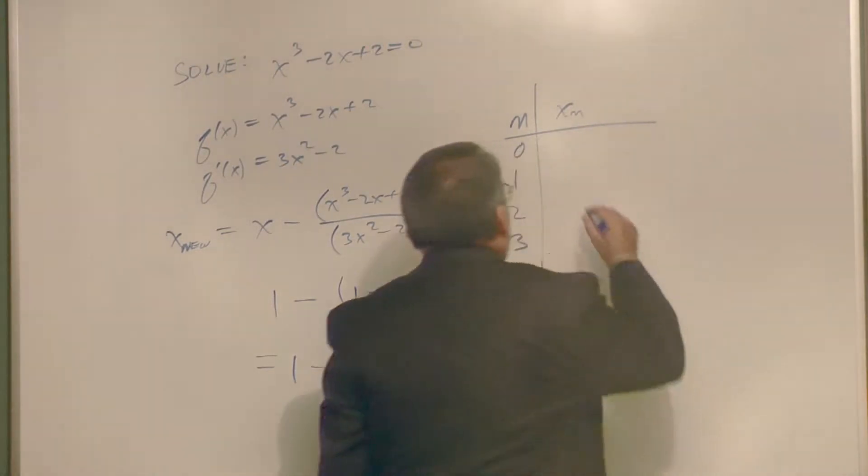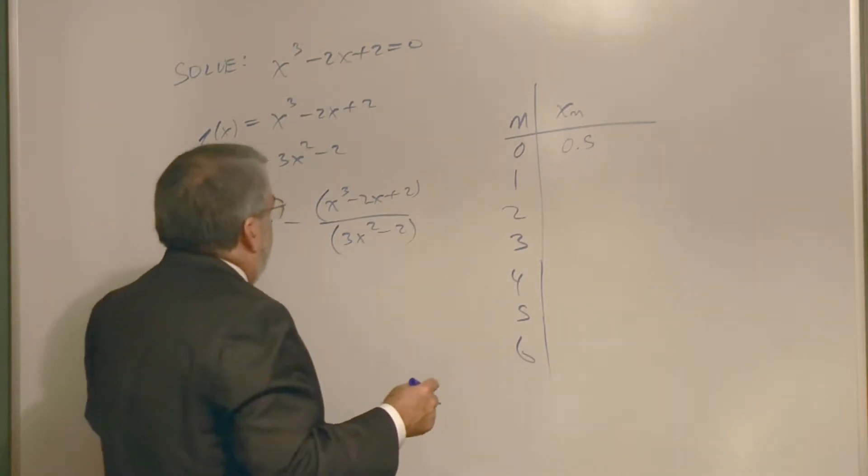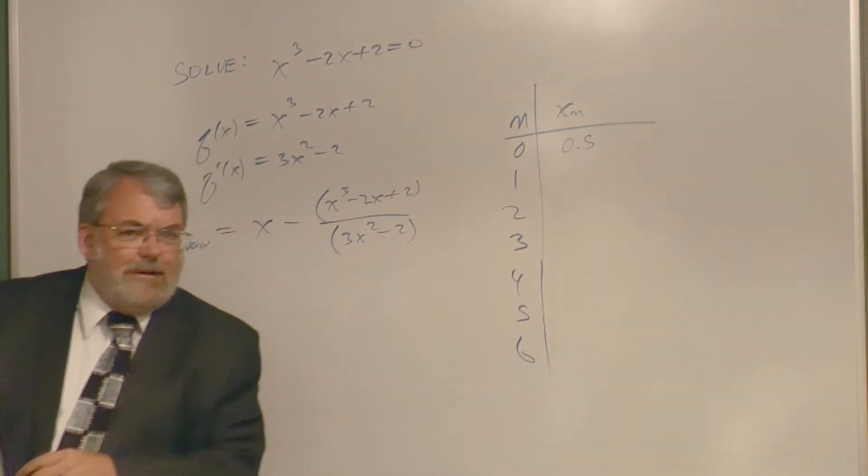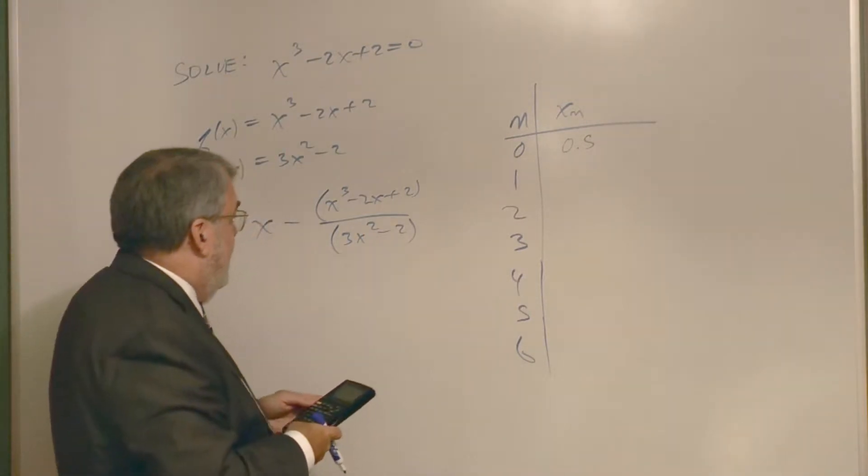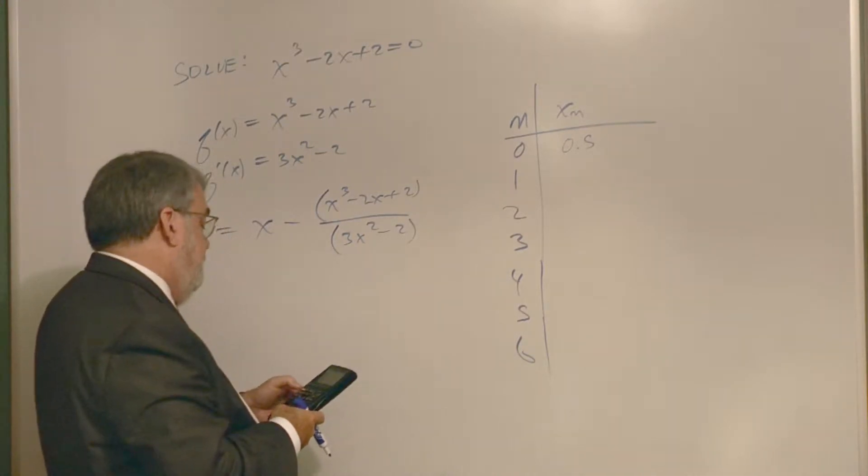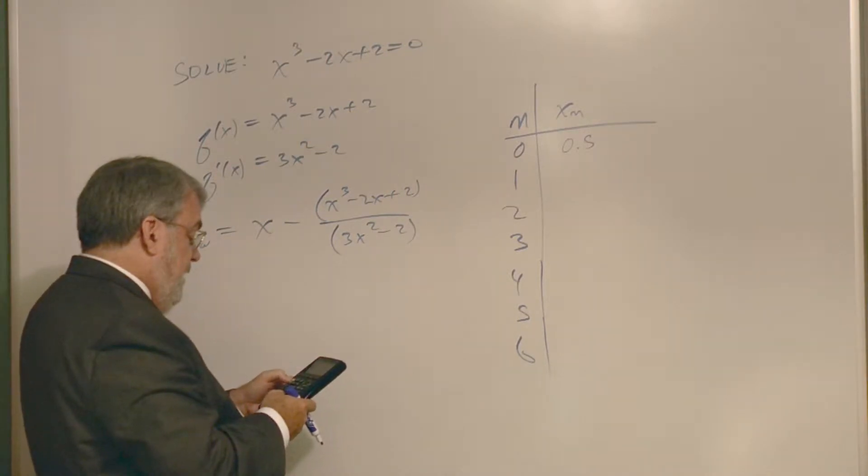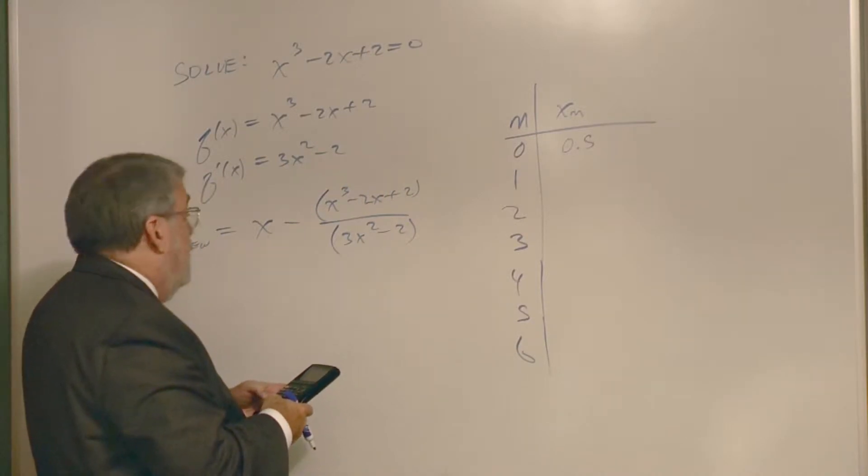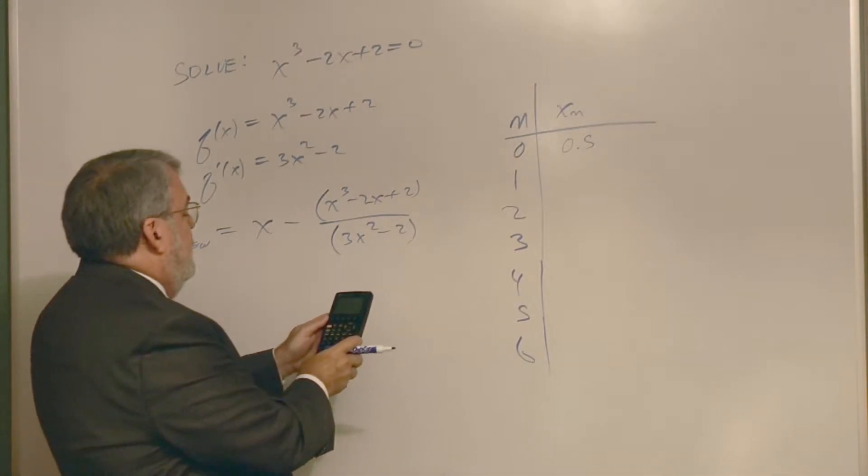If I plug in 0.5, let's call it 0.5. If I plug in 0.5, I'm going to go to the calculator because the calculator is fast. Not a lot of glory doing all that arithmetic by hand, which is what I had to do when I studied calculus. Let me see, 0.5 store x, and then I got x minus left parentheses x cubed minus 2x plus 2 close parentheses divided by left parentheses 3x squared minus 2.